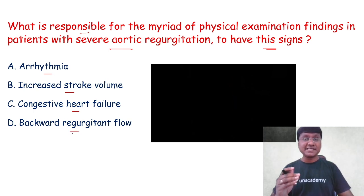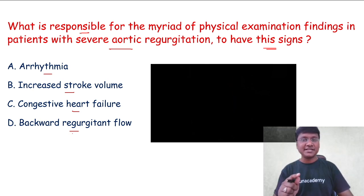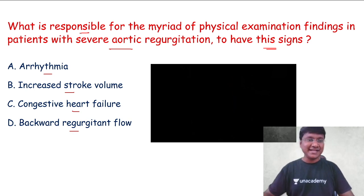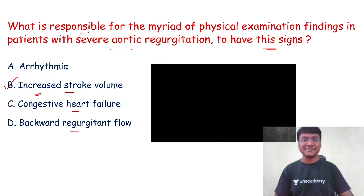Everyone is aware of the various signs in aortic regurgitation, but the question being asked is what is the mechanism for the development of those particular signs. The answer to this question is increased stroke volume — that is what is responsible for the signs in patients with aortic regurgitation.